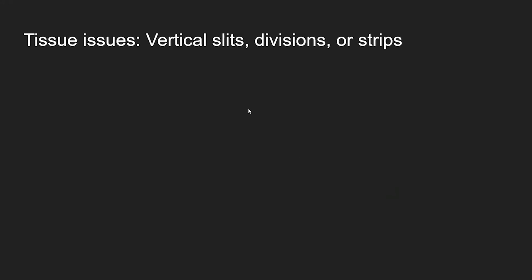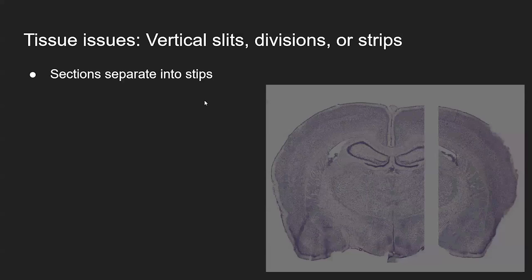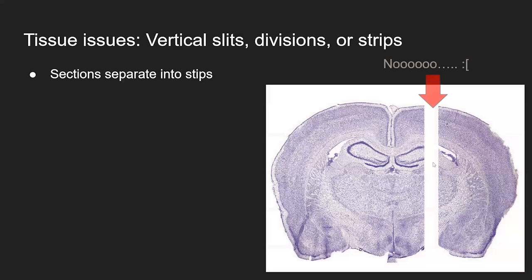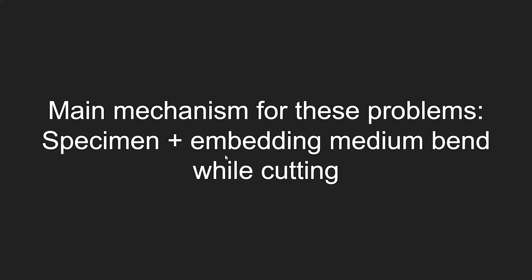There's another obnoxious thing: sometimes when you're sectioning, you might get vertical slits, divisions, or strips — sections that separate into strips. Some people might take sections and all of a sudden a whole strip is missing, getting two pieces every time the blade passes, and having to chase them down in the water bath.